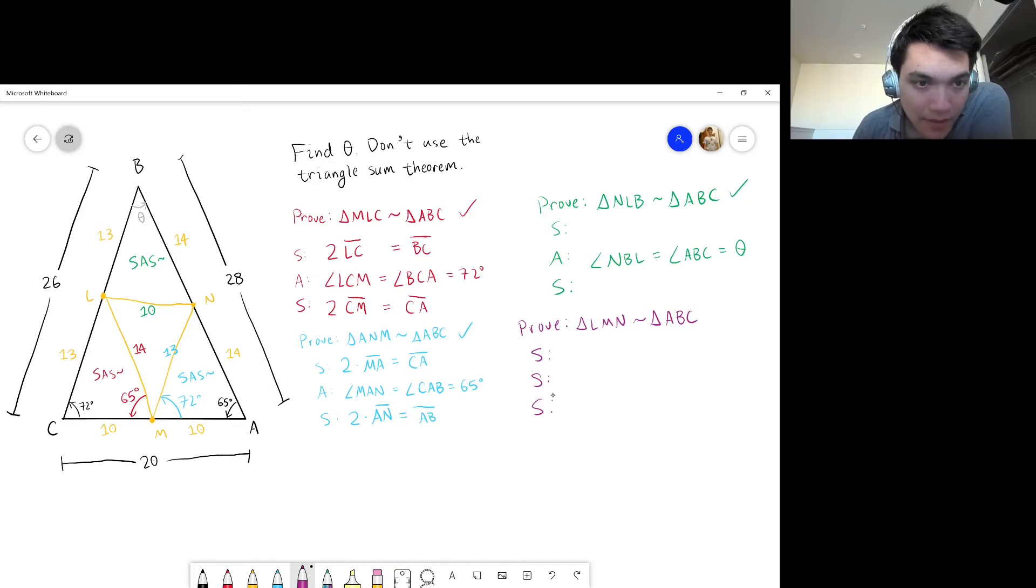Well, side LM is half the length of side AB. Or another way of thinking about that is 2 times LM gives us AB. In the same way, 2 times MN equals BC. And 2 times NL gives us the length of CA, which is 20. Thus showing that the triangles are similar by side, side, side.